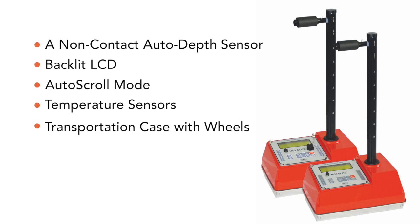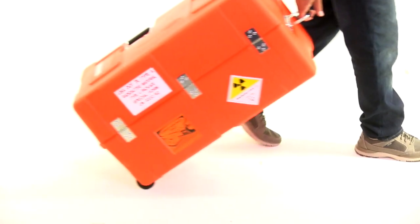The transportation case with wheels allows for easy mobility when moving the gauge inside buildings and to and from storage areas.